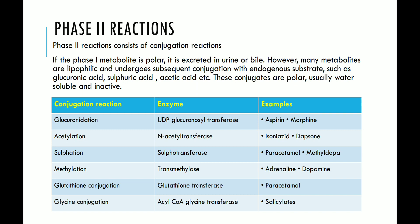There are enzymes involved in phase 2 conjugation reactions. First is glucuronidation — examples of drugs include aspirin and morphine. Second is acetylation — the enzyme involved is N-acetyltransferase, and drugs that undergo this include isoniazid and dapsone. These different conjugation reactions are very important for drug metabolism.